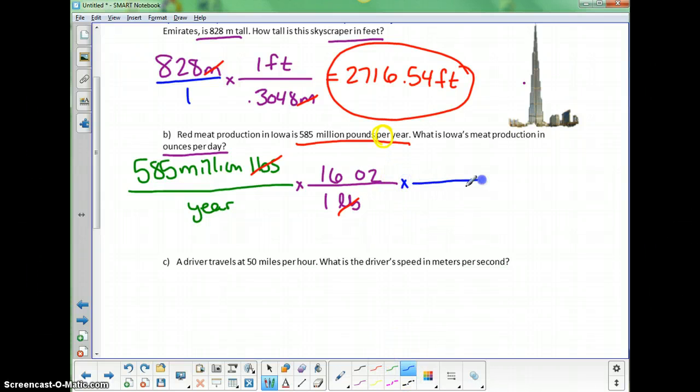Let's keep going. It's multiplied by another conversion fact in an attempt to get rid of year, since I don't want year, I want day. So I'm going to put year on the top, and I know that one year is 365 days. This is going to allow year on the bottom with year on the top to cancel. Million ounces per day, just what I want.